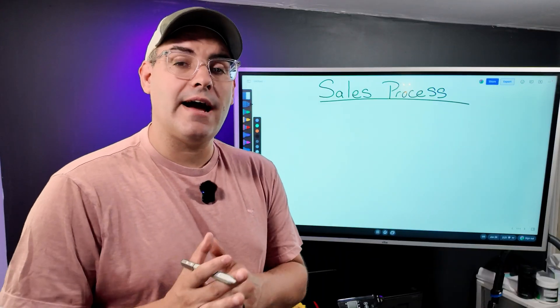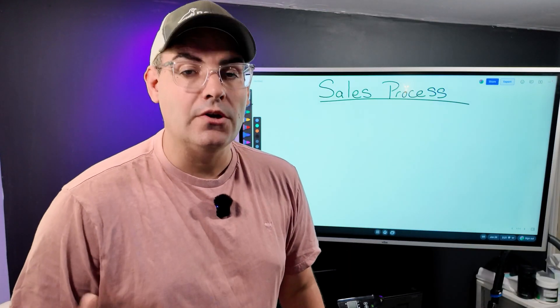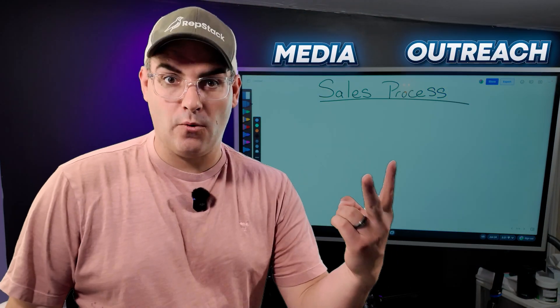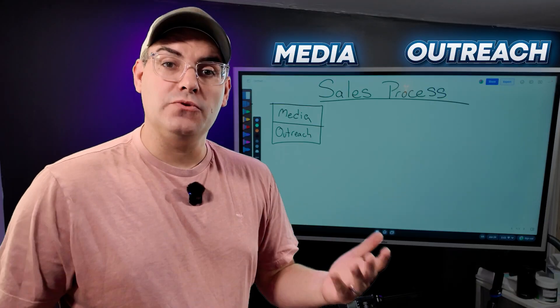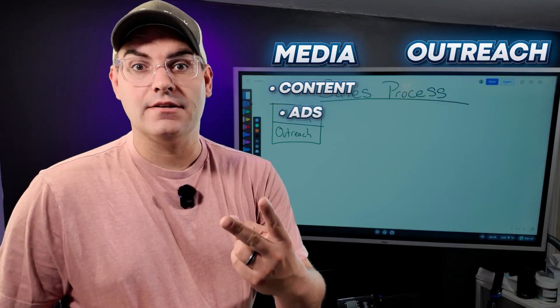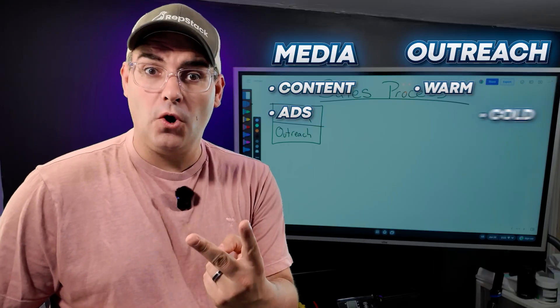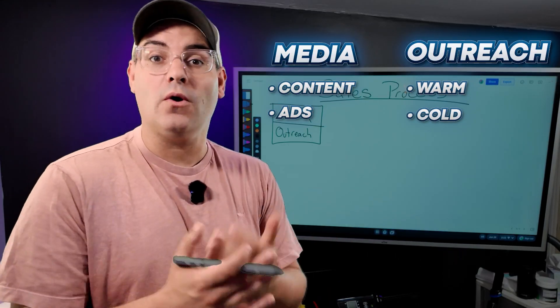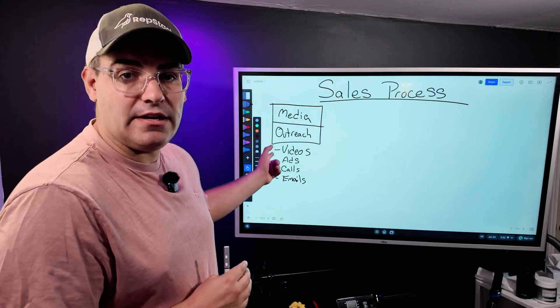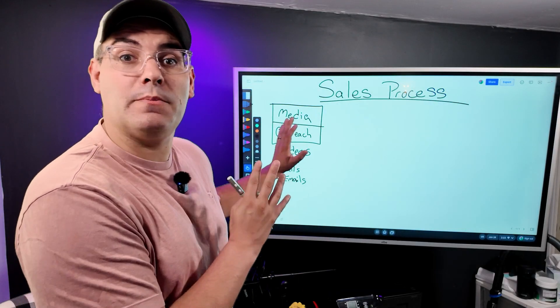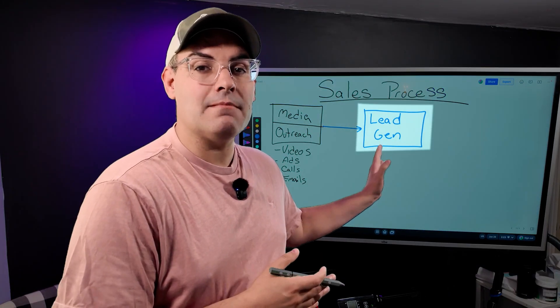Now let's take a look at the sales side and I'll show you why they're so similar. Regardless of whether you're selling HighLevel as an affiliate or as a white label, your sales process is always going to begin with either media or outreach. Media can be broken into two types: either content or ads. And outreach can also be broken up into either warm or cold outreach — you're either calling people you know or calling people that you don't. So we've got videos, ads, calls, and emails — those are the four types of ways to go find your potential customers.